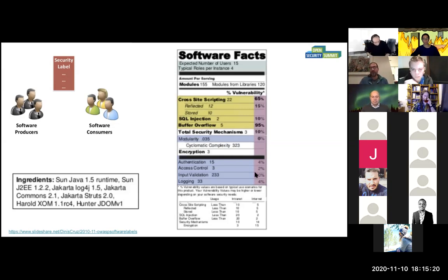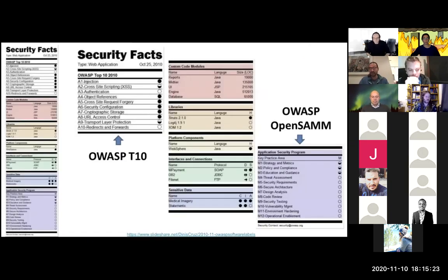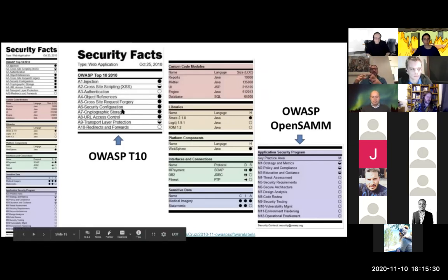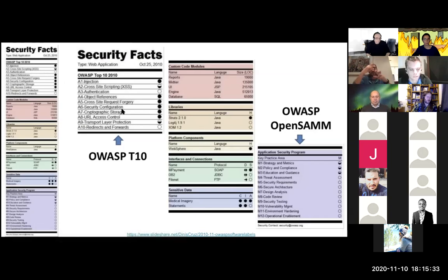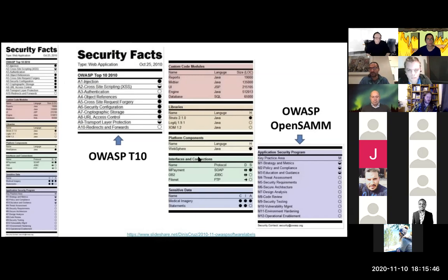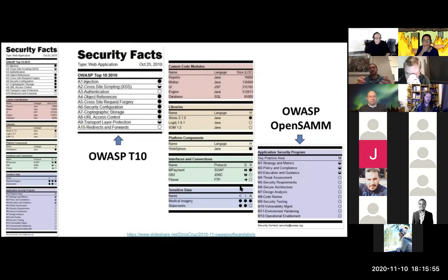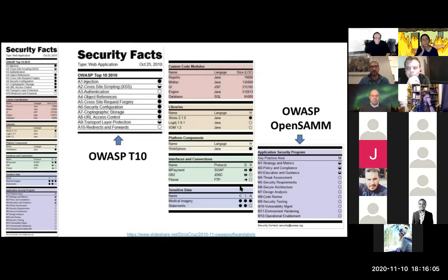Every application will have vulnerabilities — the only question is where do you start measuring? Software facts and security facts will allow us to create and think about standards. What you need for labels is top-level items you're measuring: custom code, libraries, platform, interfaces, sensitive data — and then a next layer down with more detail. There needs to be a formula that gets you to a top-level high/medium/low or A-to-F metric.